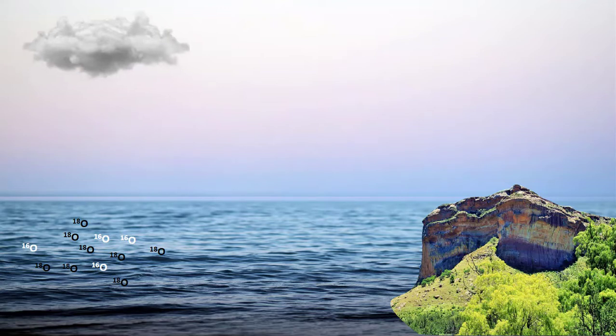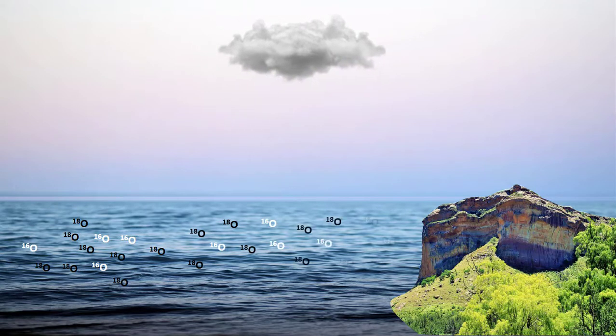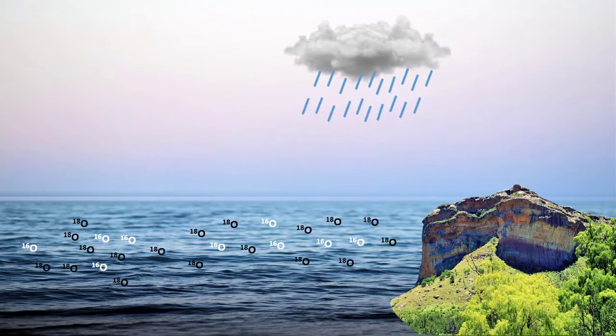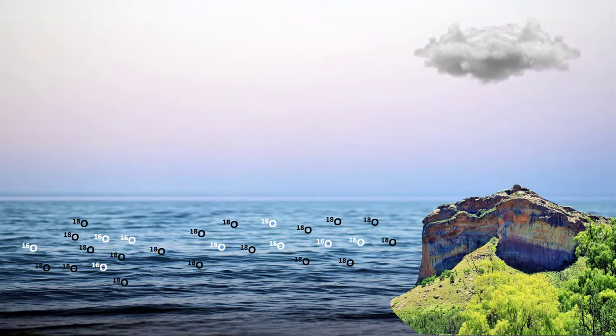When the cloud forms and precipitates again, more of H2O18 comes down, being the heavier one. And since it falls back to the ocean, the ocean becomes more and more enriched in O18 isotope.